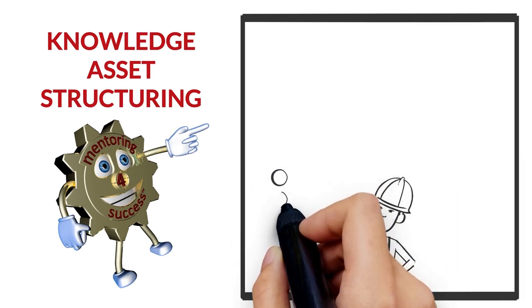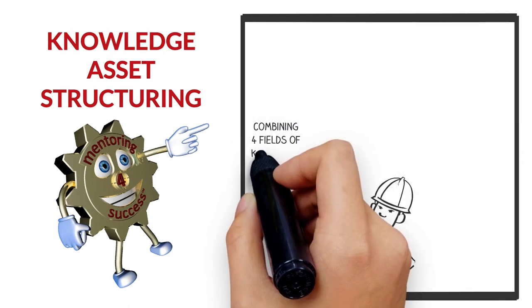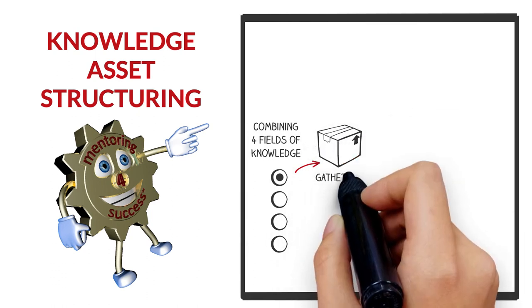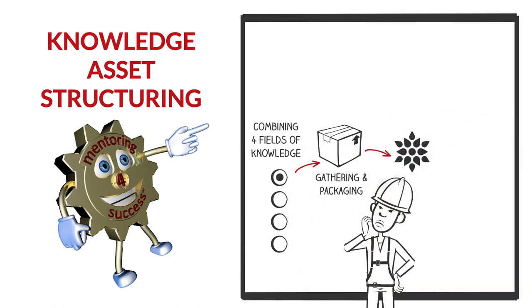This is achieved by combining four fields of knowledge for the gathering and packaging process, which optimizes pattern recognition within the knowledge themes.